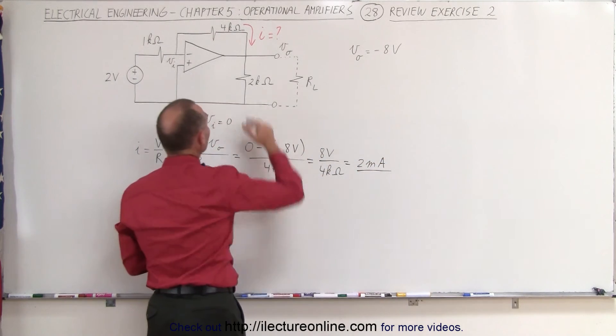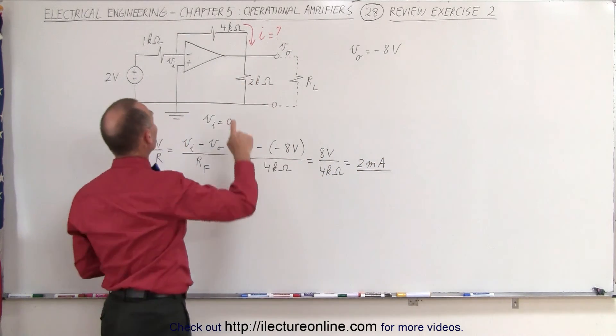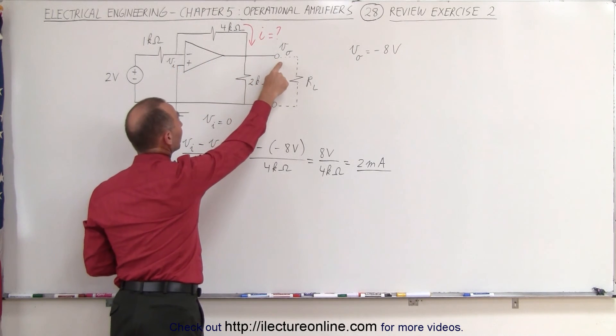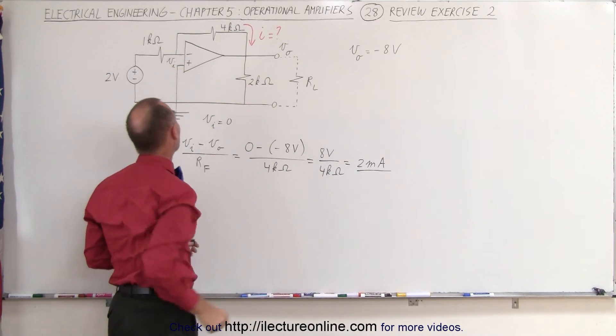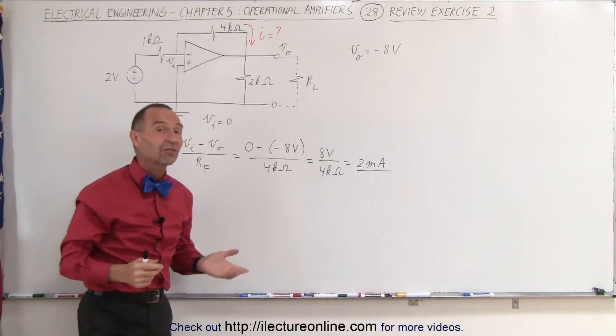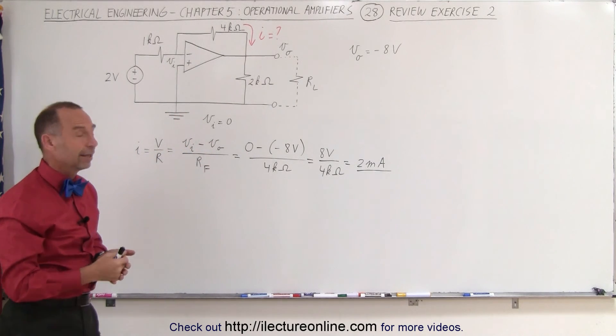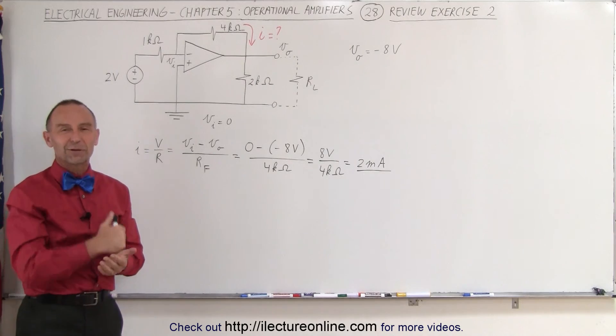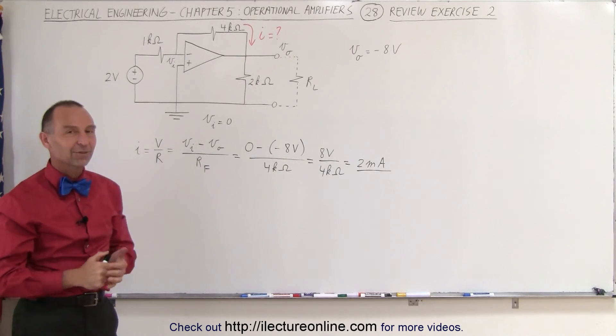And notice that the arrow direction is correct. The current is indeed flowing from here to there because there's a lower potential here compared to the zero potential at V sub i. And that's how we find the current in the circuit just like we found the voltage in the previous video. That's how it's done.